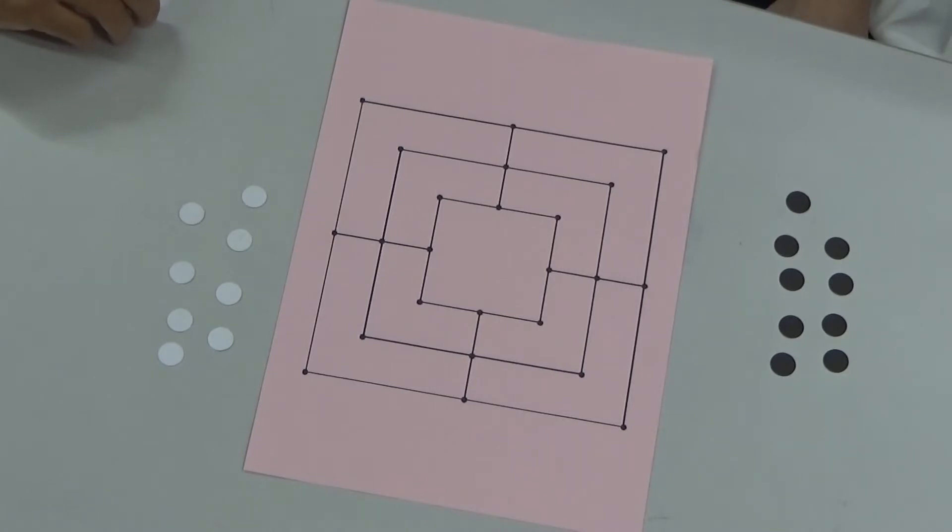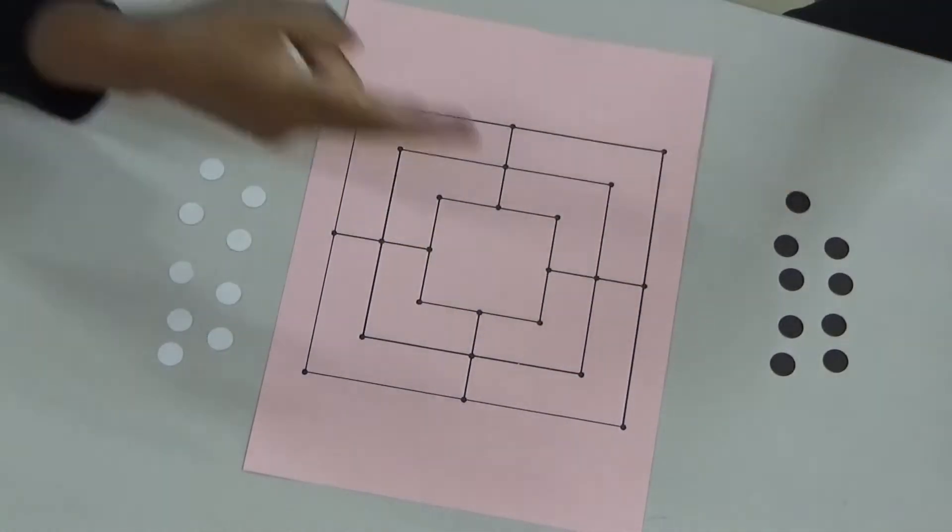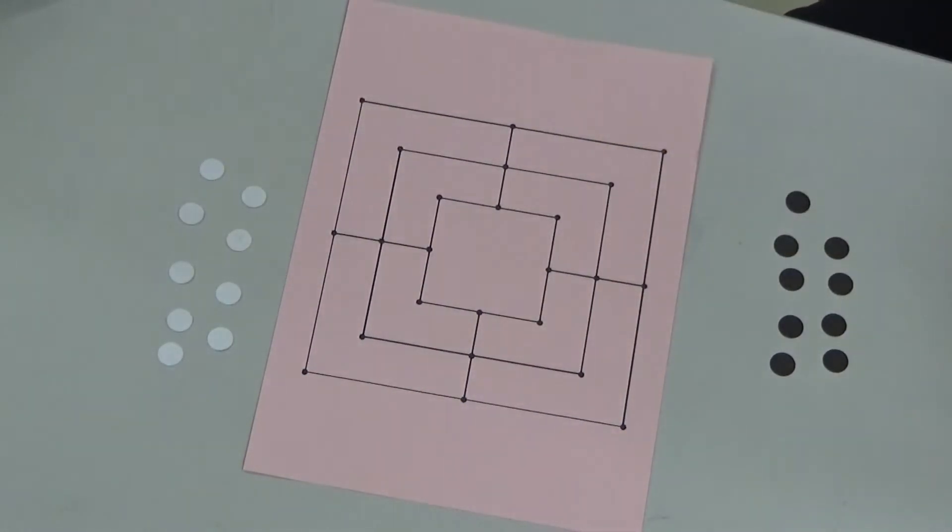Okay, so our two players are going to start the game by playing rock, paper, scissors to see who goes first. Do it over the board. Rock, paper, scissors, one, two, three. Okay, so the winner goes first.